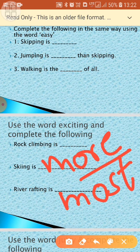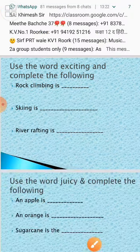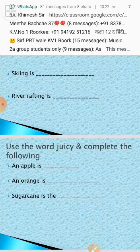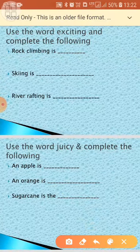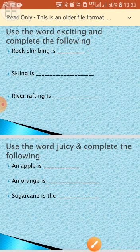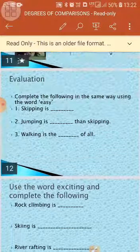Next, using the word 'juicy': 'Apple is juicy. Orange is juicier. Sugar cane is the juiciest.' So students, you have to understand this comparison of degrees.